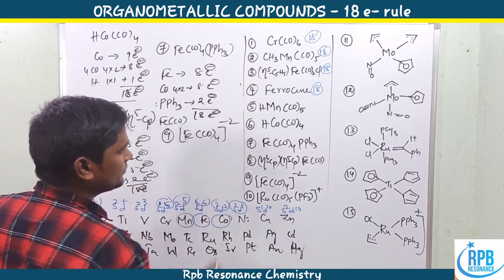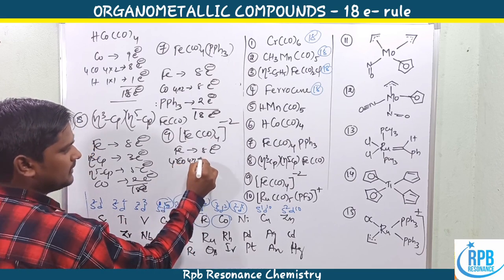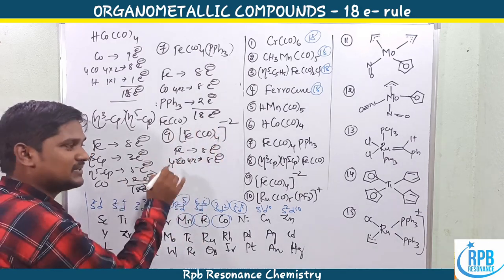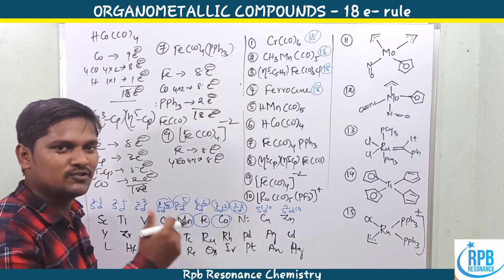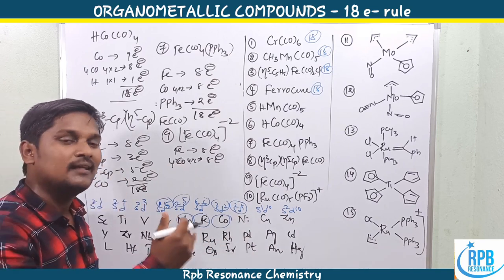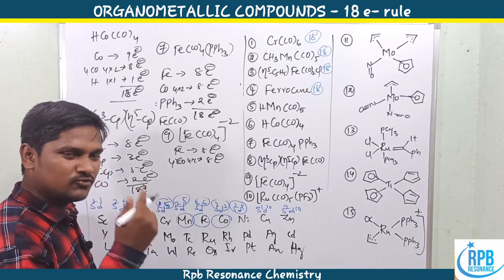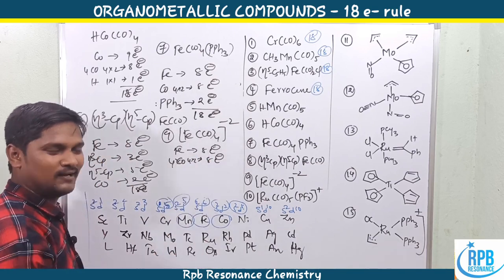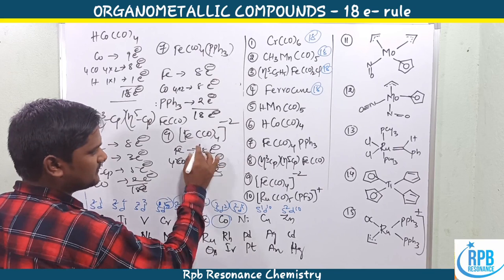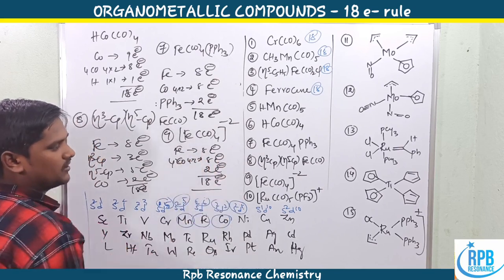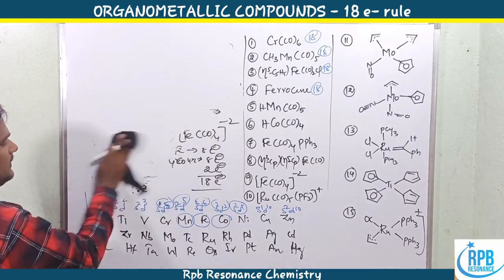The ninth example is [Fe(CO)₄]²⁻. Neutral method: iron — 8 electrons. Four carbonyls: 4 × 2 = 8 electrons. Two negative charges add 2 electrons in the neutral method. Total: 8 + 8 + 2 = 18 electrons. Note clearly: in neutral method, the number of negative charges equals the electrons added; for positive charges, that many electrons are subtracted. In oxidation state method, one negative charge equals 2 electrons (a pair). Almost all first nine examples follow the 18 electron rule.